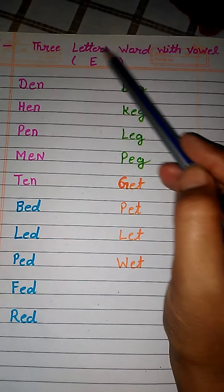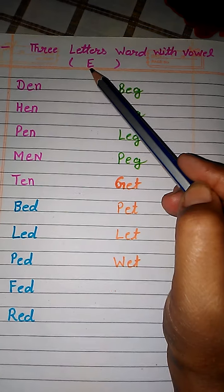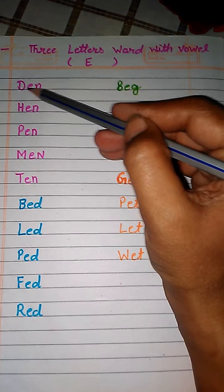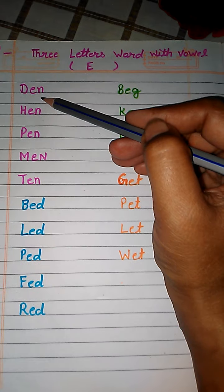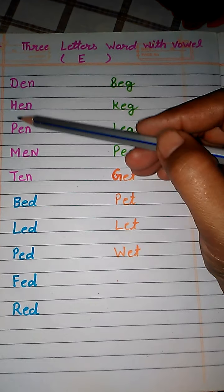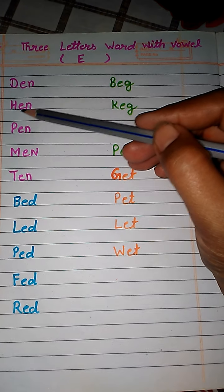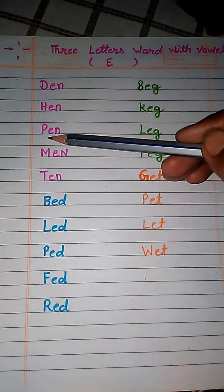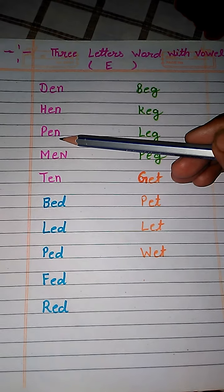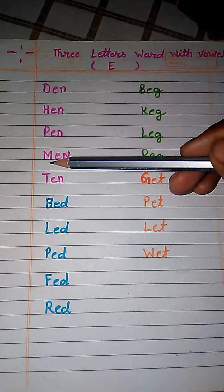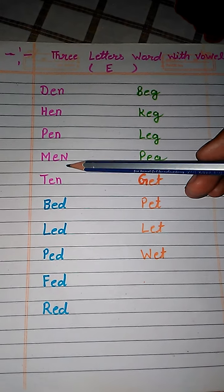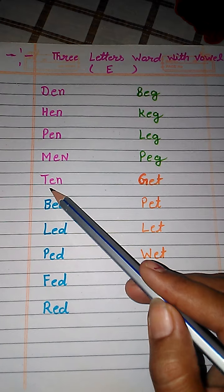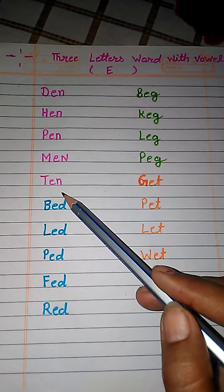3 letter words with vowel E. D, E, N — den. H, E, N — hen. P, E, N — pen. M, E, N — men. T, E, N — ten.